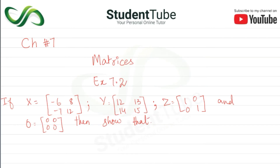Assalamualaikum, welcome to Student Tube. In today's lecture, Chapter 7, Matrices, Exercise 7.2. The question gives us four matrices: X is equal to [-6, 8; -7, 12], Y is [12, 13; 14, 15], Z is [1, 0; 0, 1], and O is [0, 0; 0, 0].